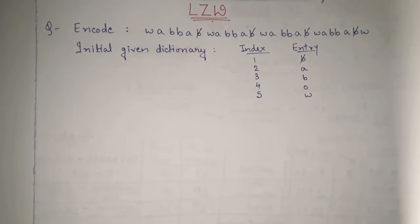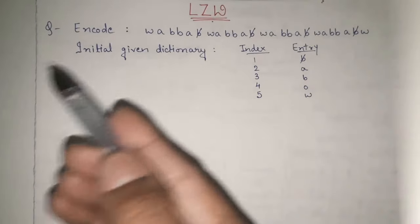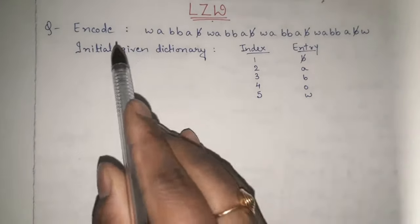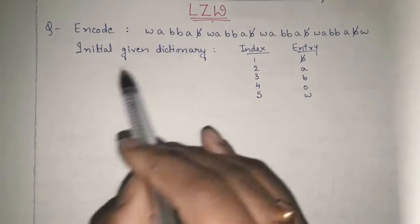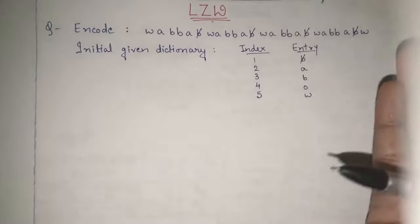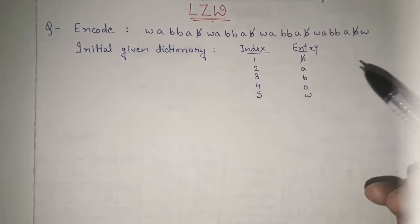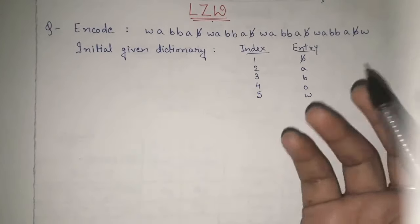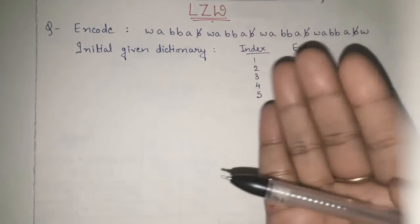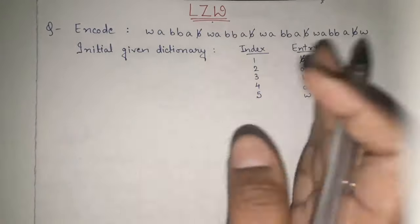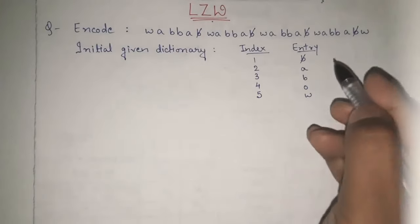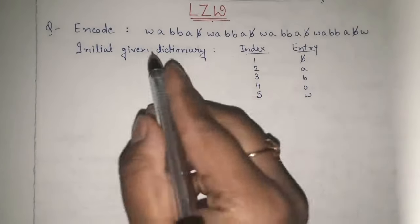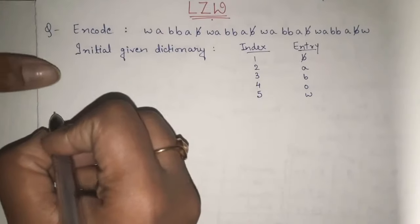Here we will see a detailed example. One sequence is given and we will directly see the example and its explanation. We are given one whole sequence and we have to encode this sequence with the help of LZW. An initial dictionary is given to us. As we know, this is a dictionary encoding method, so the initial dictionary is already given. Mostly whenever they ask LZW, the initial dictionary will be given. In case it is not given, we will keep on making the dictionary as the sequence comes. Let's start solving it.